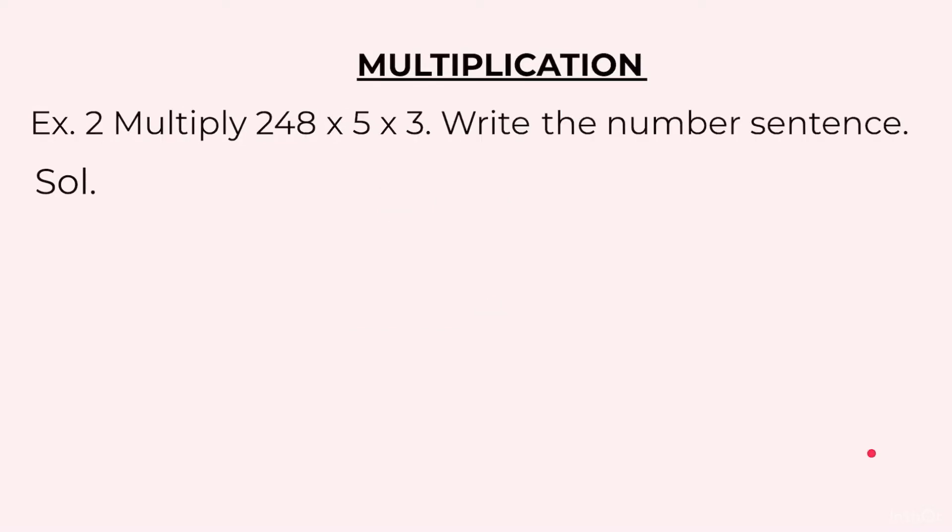Example 2: Multiply 248 × 5 × 3. Write the number sentence. Now here we are given 3 numbers, so we will take the first 2 numbers, multiply them, whatever product we get, that we will multiply with the third number.